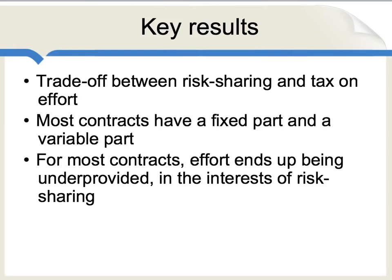Second, what we observe in the real world — and what the theory predicts — is that most contracts in the market, whether sharecropping or just a normal job, will tend to have a fixed part that someone is paid no matter what, and a variable part where there's some kind of sharing or formula with a greater payment when output is high and a smaller payment when output is low. Finally, for most contracts, we end up with effort being somewhat under-provided in the interests of risk sharing. That means there's generally a boss who wishes the workers would work harder, and the workers do not work harder in part because they know that part of the proceeds from their efforts goes to the boss.